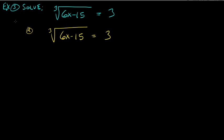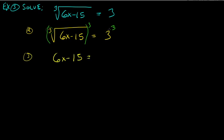What's the opposite of taking the cube root? Cubing it — raise both sides to the power of 3. That cancels the cube root on the left, leaving 6x minus 15. On the right, 3 cubed is 3 times 3 times 3, which is 27.